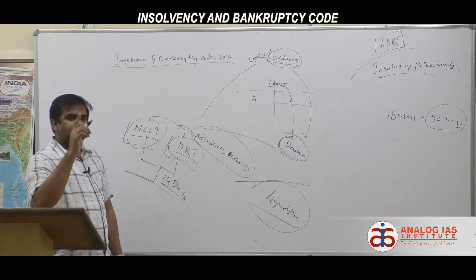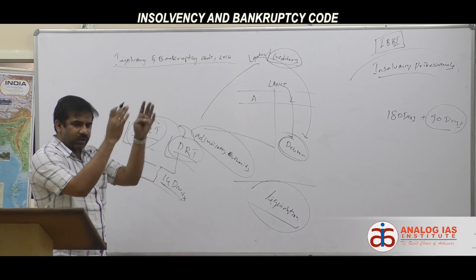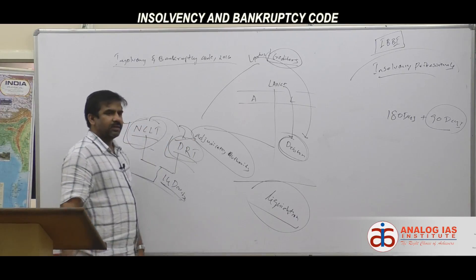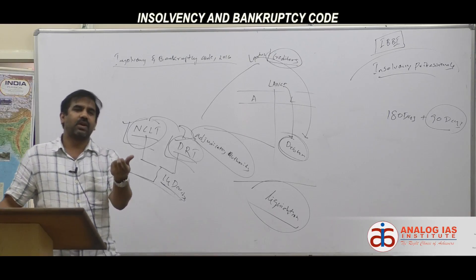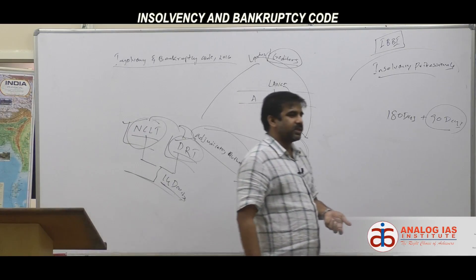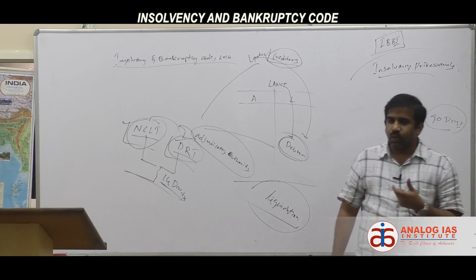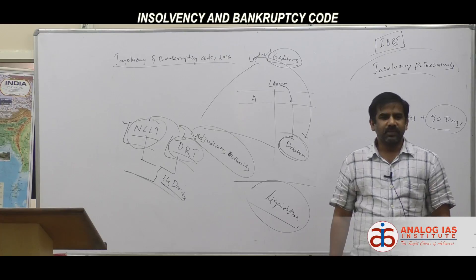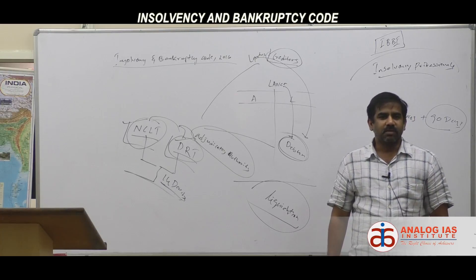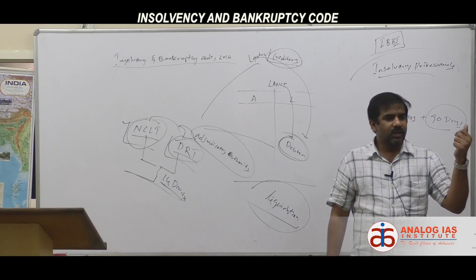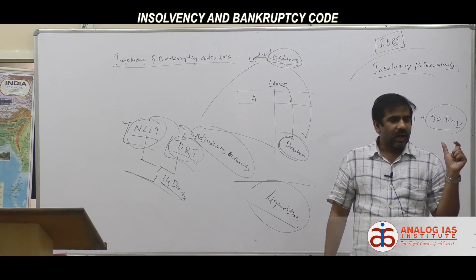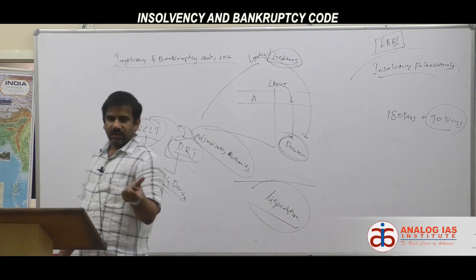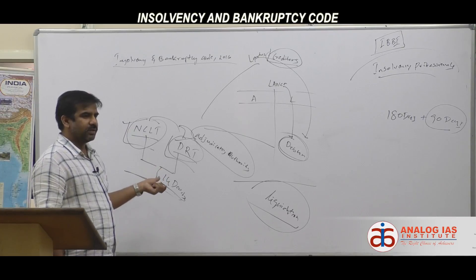Everything happens under one single law — the Insolvency and Bankruptcy Code — within a stipulated time, by one agency (either NCLT or DRT). This single reform has improved India's ranking significantly — from around 136 or higher — in the Ease of Doing Business index. Easy exit matters to investors just as much as easy entry, because not every business investment is guaranteed to be profitable.